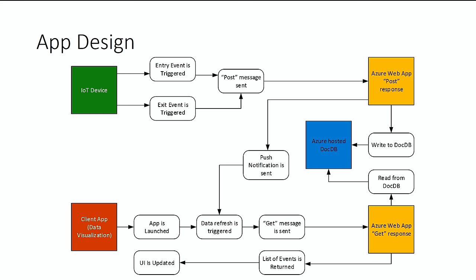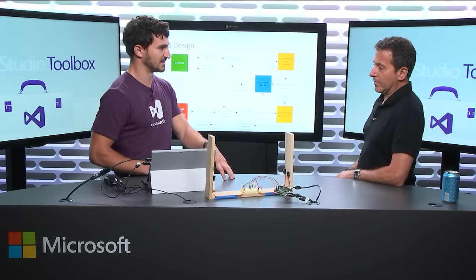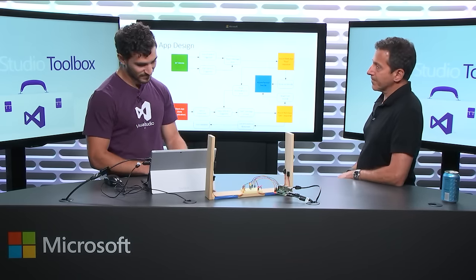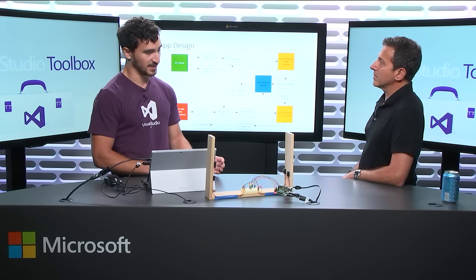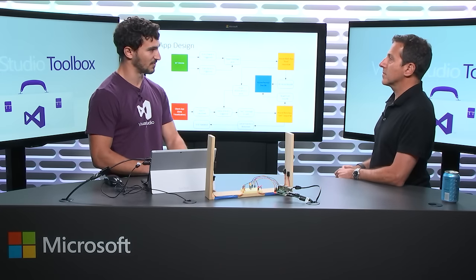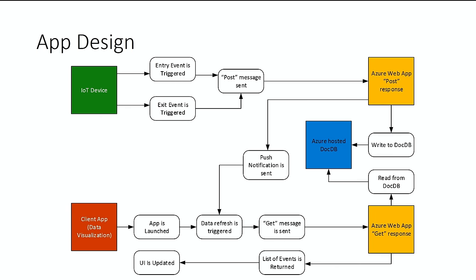We'll spend some time on the IoT device since it's more unique in modern application development. Phones have been around for a while, same with desktops, but these are up and coming. Based on the devices, I'm going to fire an entry or exit event saying someone has entered or exited my store. When that's done, it'll send an HTTP request to my Azure-hosted web API, which will write the event information — event type and time — to a database, and then send a push notification to the device running the application.